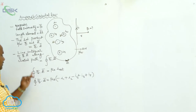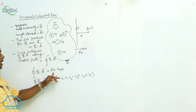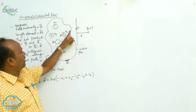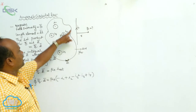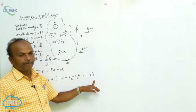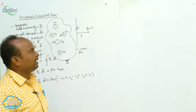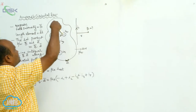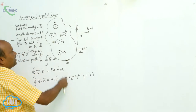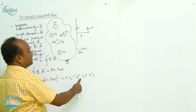The closed line integral of B dot dl equals mu naught times the net current over a surface. In this arbitrary closed path, the currents present are I1, I2, I3, I4, and I5. Generally, inward currents are taken as positive and outgoing currents as negative. Here I1 is outward — negative; I2 is inward — positive; I3 is outward — negative; I4 is outward — negative.